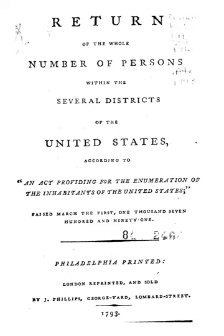For the 1870 Census, the color/racial question was expanded to include 'C' for Chinese, which was a category that included all East Asians, as well as 'I' for American Indians.